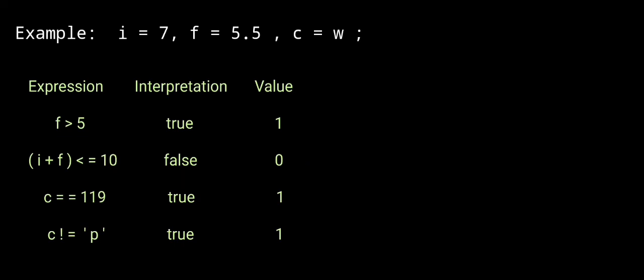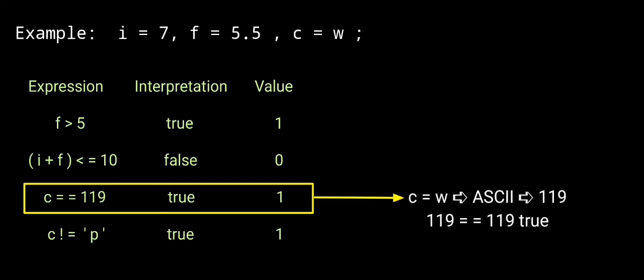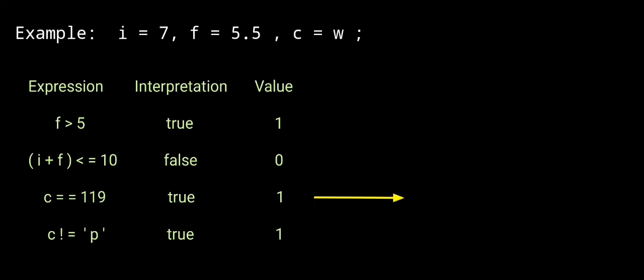Next expression: c equal to 119. c is the character variable with value 'w'. The ASCII value of 'w' is 119. So 119 equal to 119 — condition true. Interpretation is true, value 1.